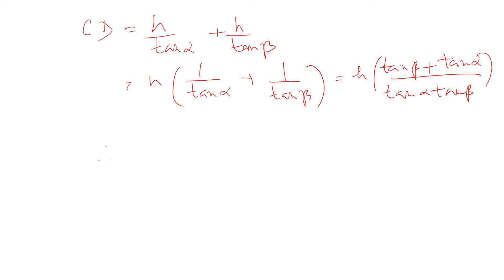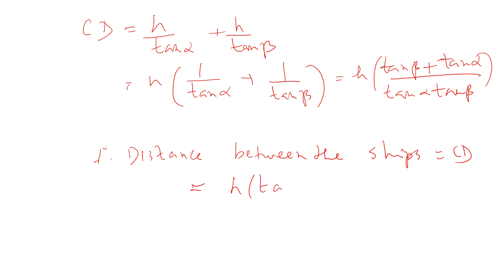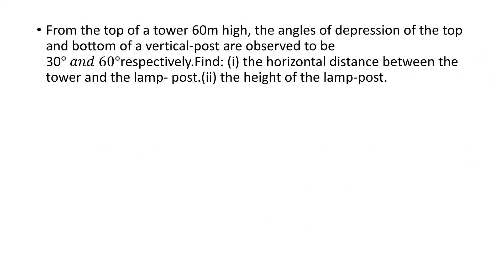Therefore, the distance between the ships is H times (tan alpha plus tan beta) divided by (tan alpha tan beta) meters. The fifth important question: from the top of a tower 60 meters high, the angles of depression of the top and bottom of a vertical lamp post are observed to be 30 degrees and 60 degrees.